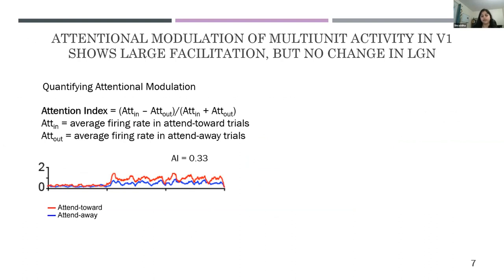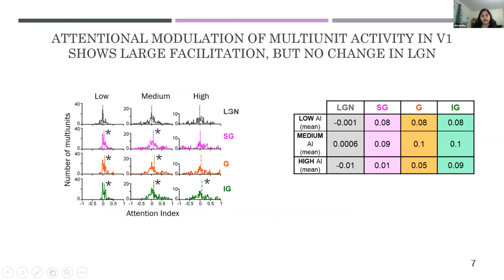We computed this AI for all multi-units across different structures and thresholds, shown here as histograms with attention index on the x-axis and number of multi-units on the y-axis. Distributions become broader with increasing threshold as variance increases, but the mean AIs — shown by dashed lines and summarized in the table on the right — are consistent across thresholds for each structure. In LGN, the mean AI is very small, close to zero, and not statistically different from zero. For supra-granular and infra-granular V1 at low and medium thresholds, the distribution shifts right and is significantly different from zero, indicating attentional facilitation.